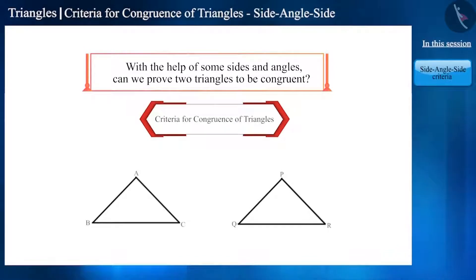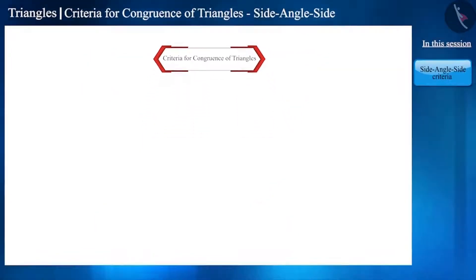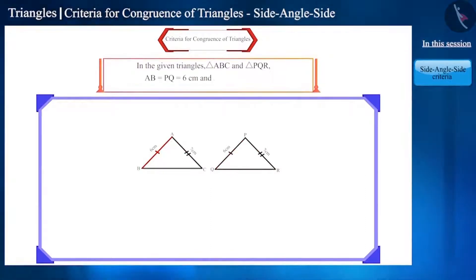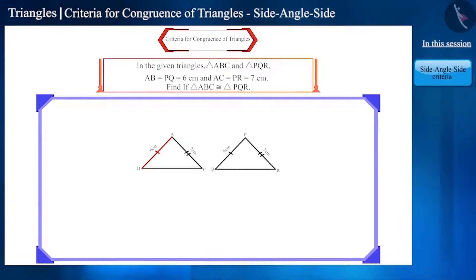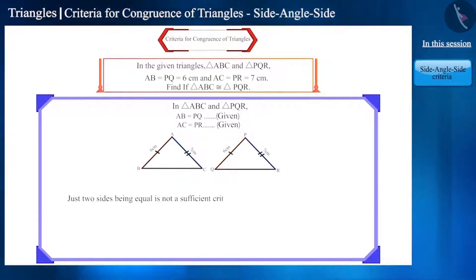In this video and in the upcoming video, we will see at least how many sides or angles must be equal for two triangles to be congruent. In triangle ABC and triangle PQR on the screen, both sides AB and PQ are 6 cm and sides AC and PR are 7 cm. Will two triangles be congruent if the two sides of any two triangles are equal? Will the third side also be equal? It may or may not be equal — just two sides being equal is not a sufficient criterion for the congruence of triangles.